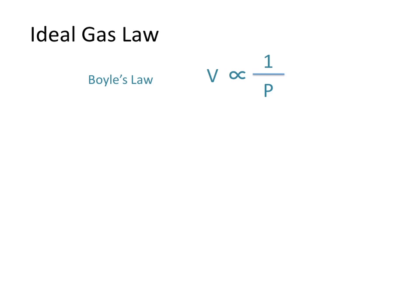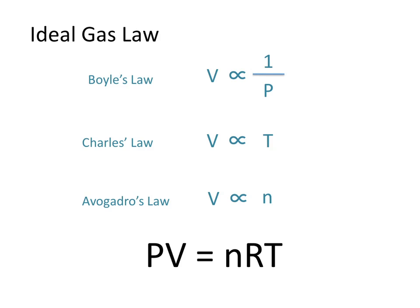The Ideal Gas Law is a combination of several laws determined by different scientists. Boyle's Law, which relates volume and pressure. Charles' Law, which relates volume and temperature. And Avogadro's Law, which relates volume and the number of moles. These combine to give the Ideal Gas Law.